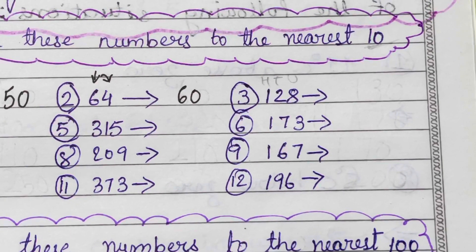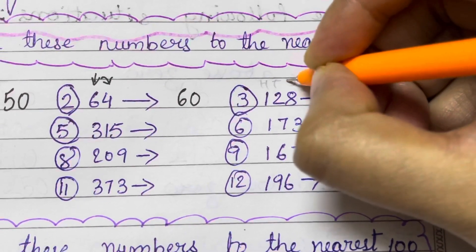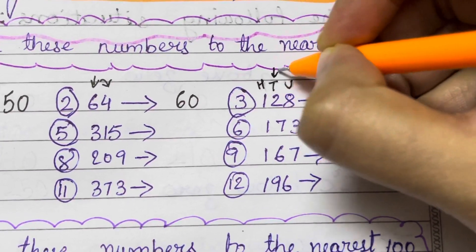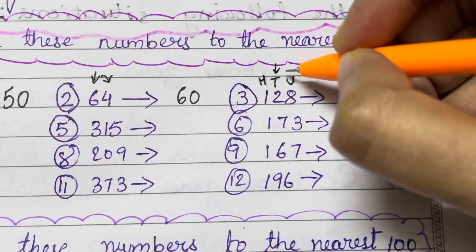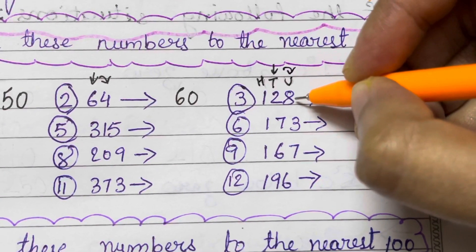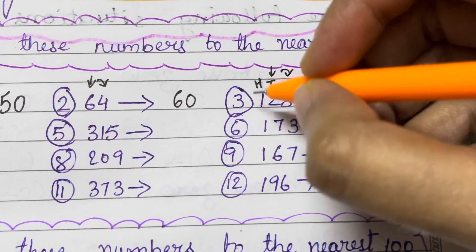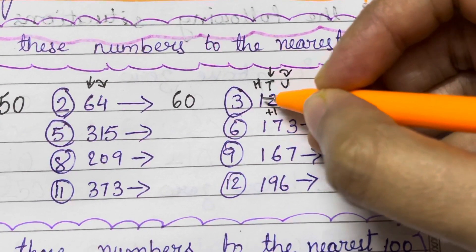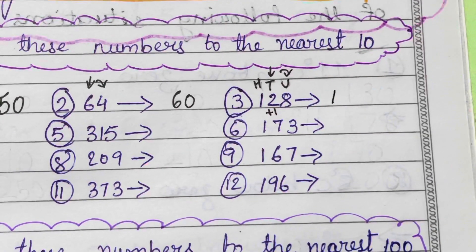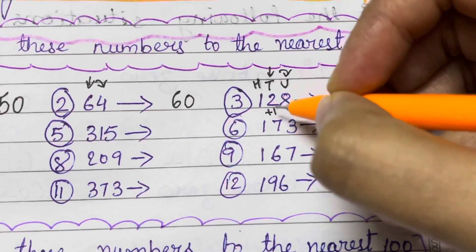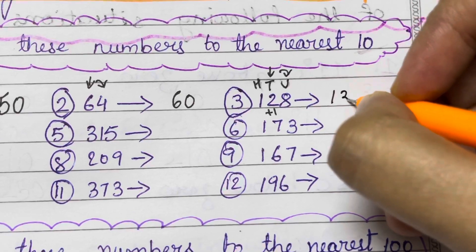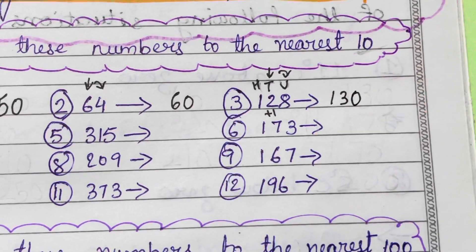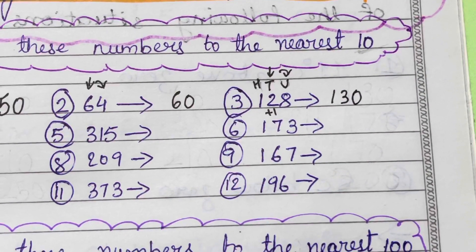Now here we have 3 digits. Let us write down the places — units, tens, and hundreds. The tens place is 2. The digit after 2 is 8, which is more than 5, so we add plus 1 to 2. The hundreds place, 1, remains as it is. 2 plus 1 becomes 3, and the digit 8 becomes 0. So it has rounded off to 130.